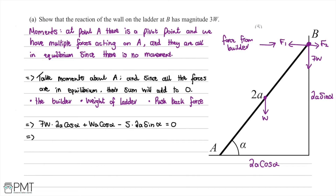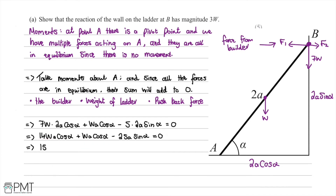Expanding the constants: 7 multiplied by 2 gives 14, so we have 14wa cos(alpha) plus wa cos(alpha) minus 2Sa sin(alpha) = 0. Combining the first two terms gives 15wa cos(alpha). Adding 2Sa sin(alpha) to both sides gives 2a times S times sin(alpha) = 15wa cos(alpha). Dividing both sides by a gives 15w cos(alpha) = 2S sin(alpha).